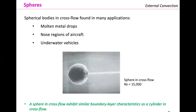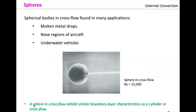We are also going to evaluate spheres in external convection. Spherical bodies in cross flow are found in many applications: molten metal drops, nose regions of aircraft, and underwater vehicles. A sphere in cross flow exhibits a similar boundary layer behavior as a cylinder in cross flow — with nice laminar flow on the front and a turbulent wake region. We are evaluating the external surface.